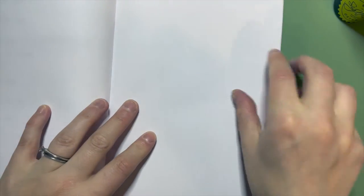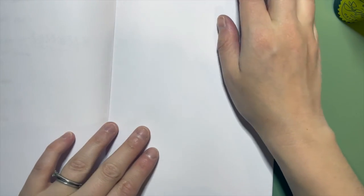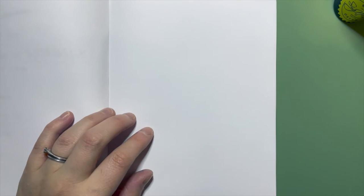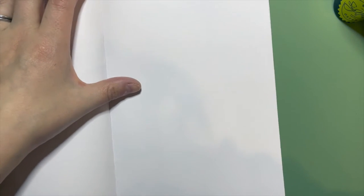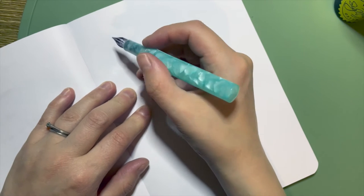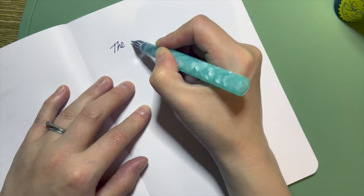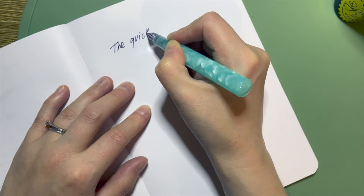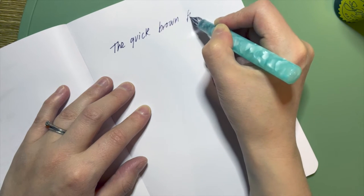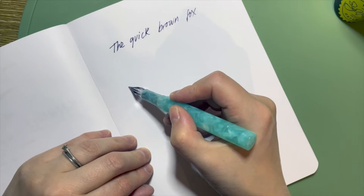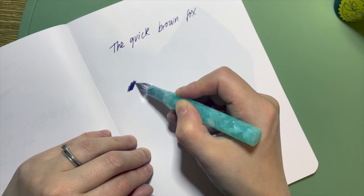Number three on the list, this is Clairefontaine 90 gsm blank paper. This doesn't feel as coated as the optic, but it definitely isn't as thin as like a Tomoe River. Clairefontaine is a very famous fountain pen friendly paper, and for good reason. It writes really nicely on it, it takes the ink really well.